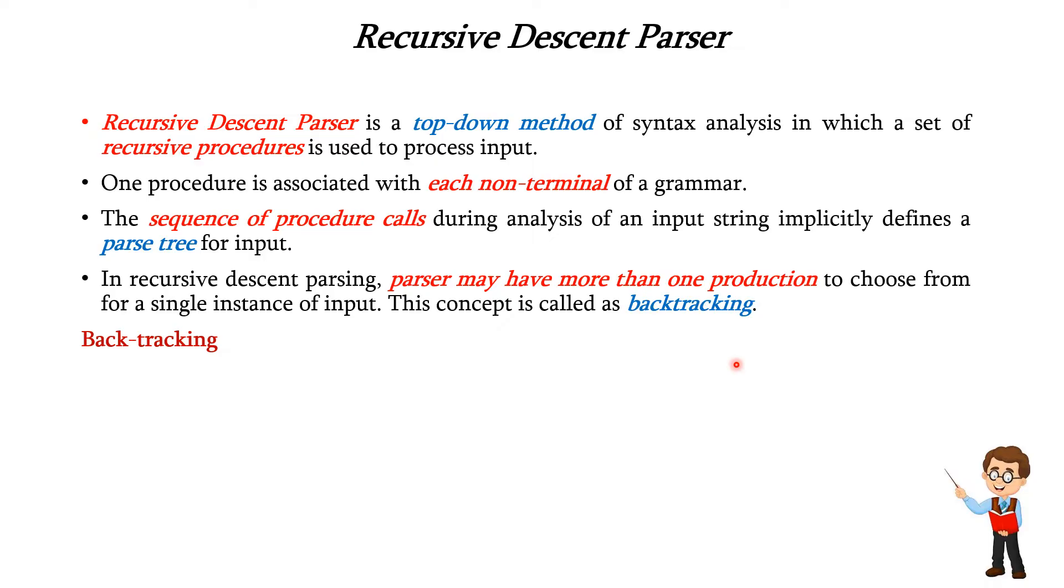Let us discuss backtracking. It means that if one derivation of a production fails, syntax analyzer will restart the process using different rules of the same production.